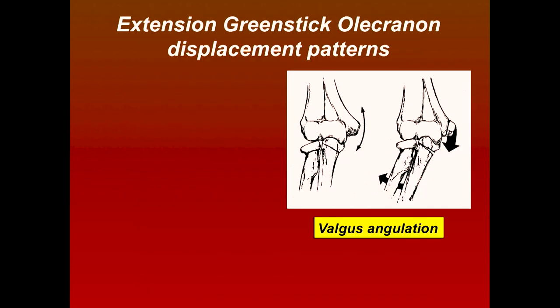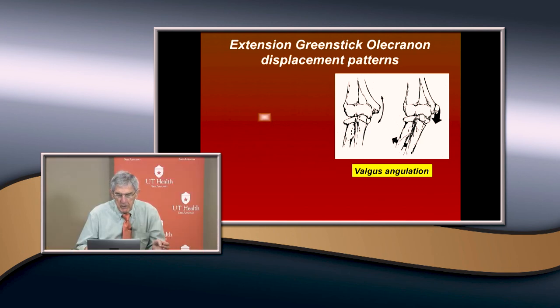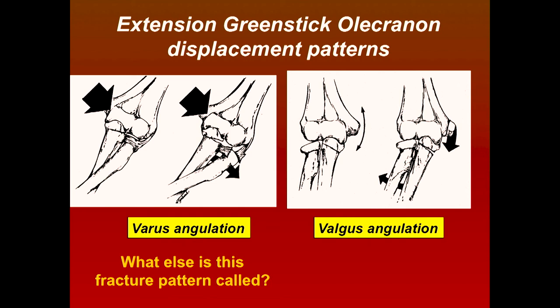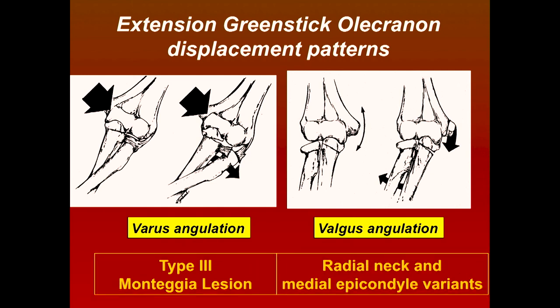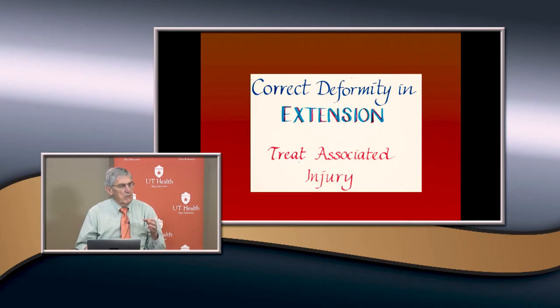Extension injuries are often greenstick displacement fractures. What you need to look for is the ulna and the radial neck. With valgus angulation you'll often have the medial epicondyle avulsed and the radial neck is hit. With varus angulation you have a radial head dislocation and a Monteggia type 3 injury. Treatment of greenstick varus and valgus: correct the deformity in extension and treat the associated injury - whether it's the radial neck, medial epicondyle, or radial head dislocation.